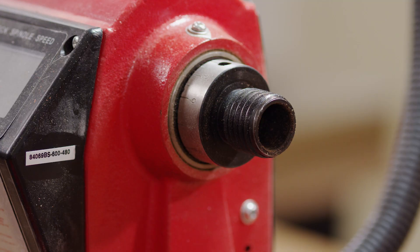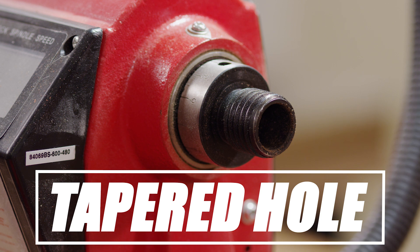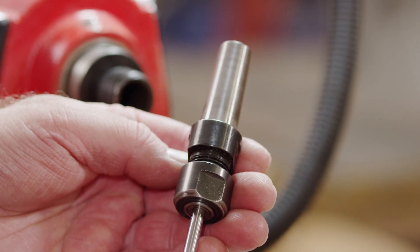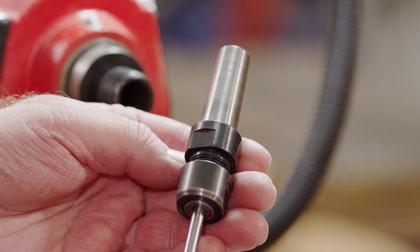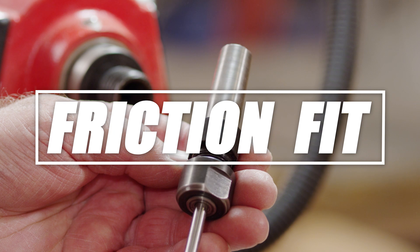Almost all woodturning lathes use a tapered hole in the headstock spindle for mounting the mating accessories. The headstock spindle is designed for a male-ended, slightly tapered shank to fit into it. The pressure of the two mating tapers, male and female, creates a friction fit that prevents slippage.